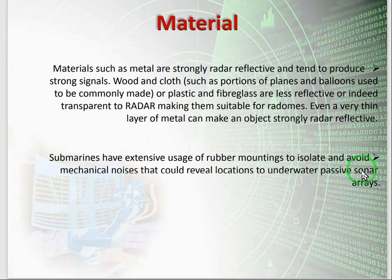Starting from the summary: in the material section, we discussed that stealth technology should not use metal, as metal is a strong reflector of radar frequency. The basic phenomenon of stealth technology is that the stealth plane should not be made of metal. We have used mostly plastic or fiberglass for planes which should not be identified.